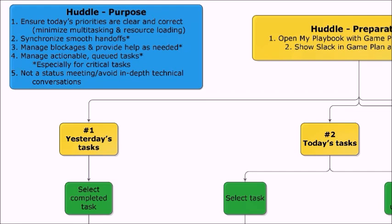Number four is to manage the actionable queue tasks — things in the backlog that are ready to go, just waiting for someone to have time. Is there an opportunity to move those things forward? Maybe we can hand it off to another individual. Those are the things we're really looking at.